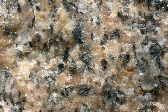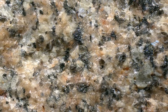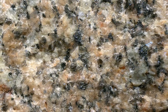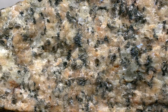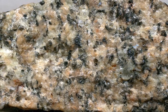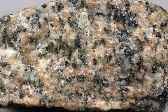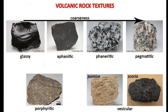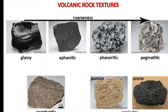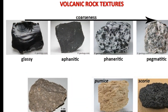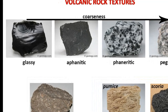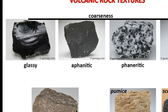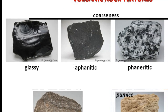Glass results when unordered ions are frozen before they are able to unite into an orderly crystalline structure. Obsidian, a common type of natural glass, is similar in appearance to a dark chunk of manufactured glass because of its excellent conchoidal fracture and ability to hold a sharp, hard edge.